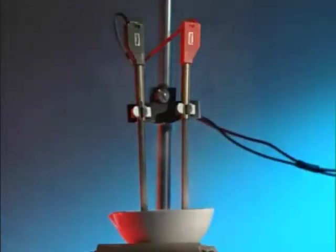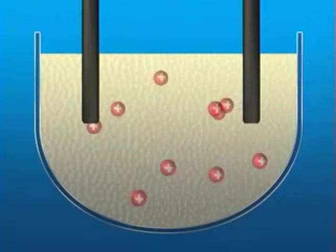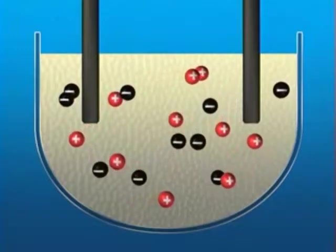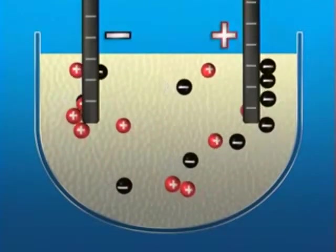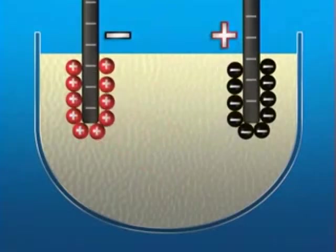To work out why this happens, imagine you can see the charged particles, the ions, in the compound. There are positive lead ions and negative bromide ions. Once the power supply is switched on, the lead ions are attracted to the negative electrode. The bromide ions are attracted to the positive electrode.